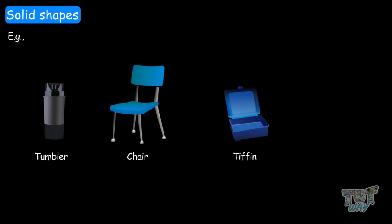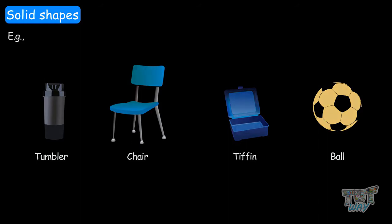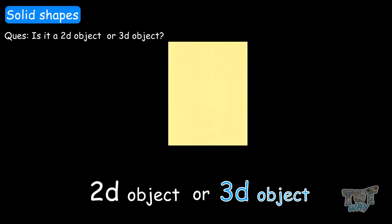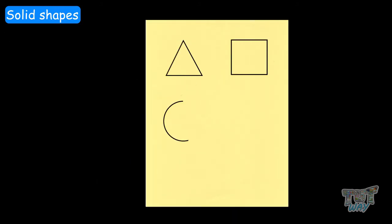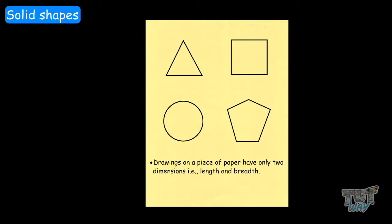So this tumbler, this chair, this tiffin, this ball — all of these are solid shapes. Now, here we have a paper. Is this 2D or 3D? The paper is not a 2D object because it has a certain height — a very small height, but it does have a height. So the paper itself is a 3D object. Only drawings on a piece of paper are 2D; they only have a length and a breadth. But all flat things could also have a height — for example, this paper. This is a 3D object.